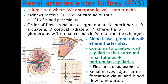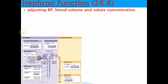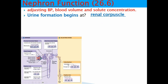The glomerulus and renal corpuscle are where most main functions occur, with continuous exchange also along the peritubular capillaries and the rest of the nephron. Nephron function helps adjust blood pressure, blood volume, and solute concentrations — more detail on that in lecture two. Urine formation begins at the renal corpuscle; glomerulus is also an acceptable answer since that's where filtration starts technically.